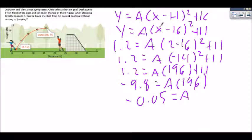Okay, so what I did was I plugged in my point. I simplified the inside, subtracted 11 from both sides, divided by 196. And that's how I found A.